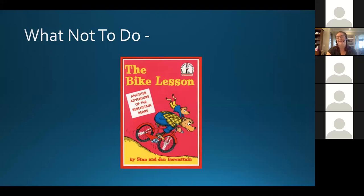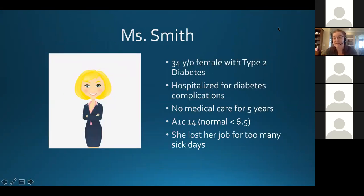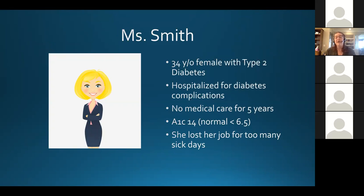So what not to do in caring for patients with substance use disorders. We're going to start with the story of Ms. Smith. She's a 34-year-old female with type 2 diabetes. She didn't know she had diabetes until she was hospitalized with complications. She hasn't had any medical care for the last five years. Her A1c is 14, which is far above the goal range of 6.5 to 7. Because of health problems associated with her poorly controlled diabetes, she lost her job for too much absenteeism.